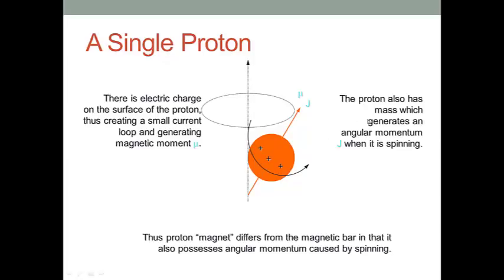Also, a proton has mass and it's spinning. So if you know high school physics, a mass with spinning generates an angular momentum G. This is the angular momentum G. So from this sense, we can find that the proton can be treated as a magnet.